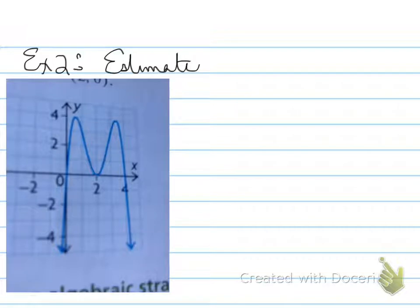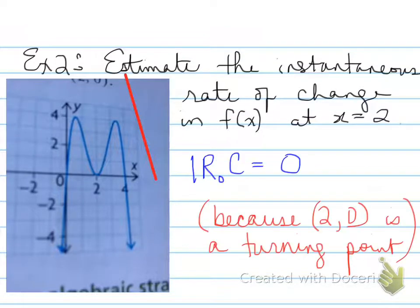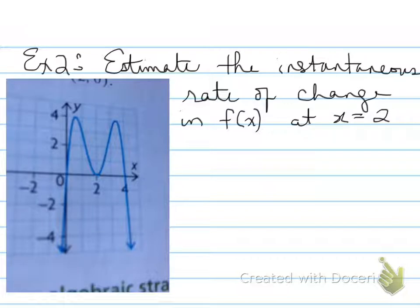Let's look at the next example. Example number 2. You're asked to estimate the instantaneous rate of change in the function f(x) at x equals 2. All right. So let's look at all of this and what this means. I just want to take a step backwards for a second. And what do we have here is the following.